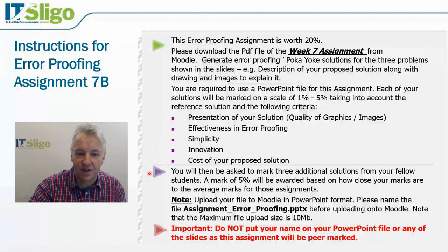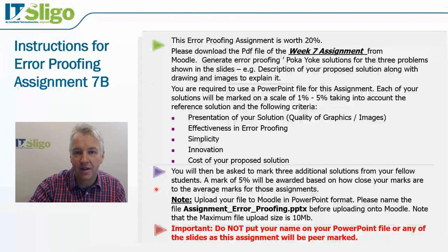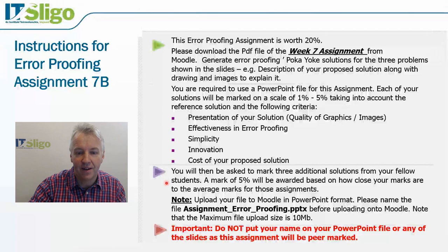You'll be asked to mark three additional solutions from fellow students, and the mark you give will be rated against the average mark given to them. There are additional resources on Moodle explaining how the Moodle workshop module works. Basically, if you rate a student one out of five but your peers rate them five out of five with an average of four, you'll get a lower marking score. The three assignments plus peer marking add up to 20%.